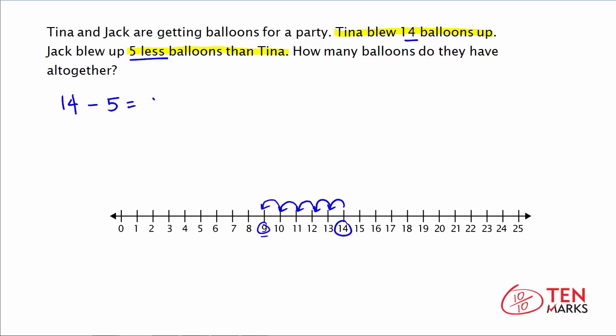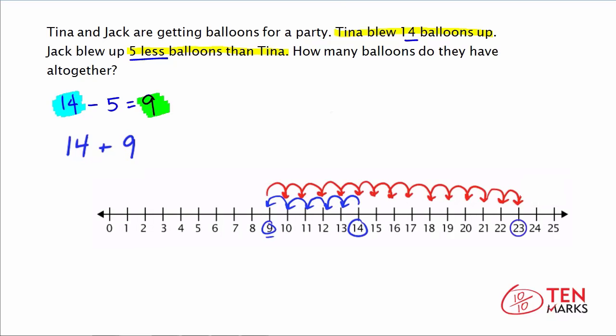So if we want to know how many balloons they have all together, Tina has 14 — highlighted in blue — and Jack has 9 — highlighted in green. We're going to add 14 and 9. From the number 9 on the number line, count up 14 times, and you land on 23. That means Tina and Jack have 23 balloons for the party in all.